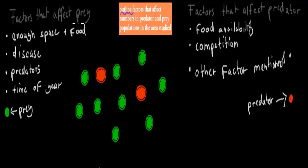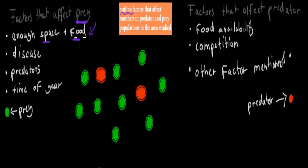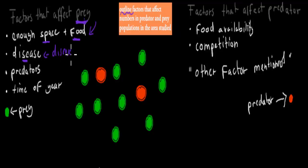So what factors would affect the prey — the thing that's being eaten? Every organism needs to have food and space, so the prey itself needs enough food and enough space. For example, if there isn't enough grass, the rabbit population will go down. The prey needs enough space and food to thrive. It also should ideally be disease-free, because disease will obviously kill the prey and bring down its numbers.